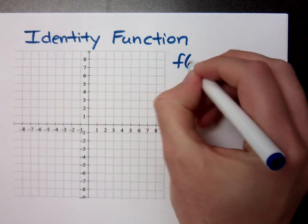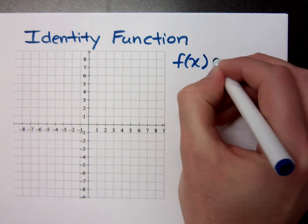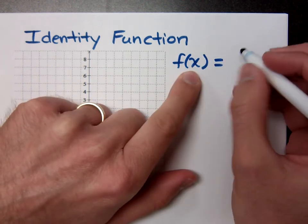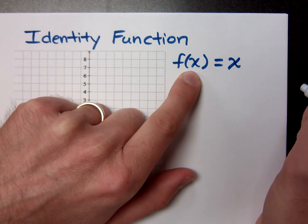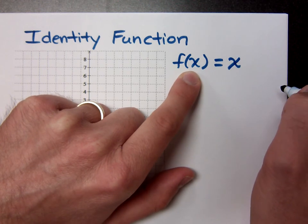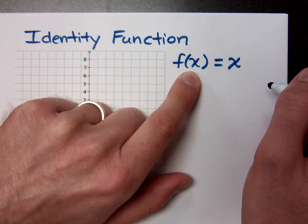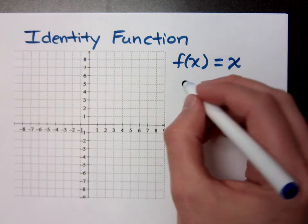Now, the main guy that we have is the identity function. Basically what it says is that whatever you plug in is exactly what you get out. It's an identity. You plug in two, you get two. Is that cool? Maybe.